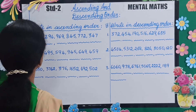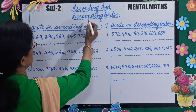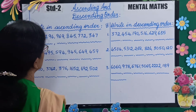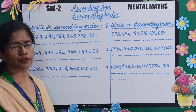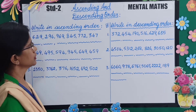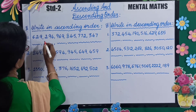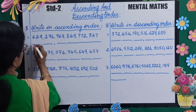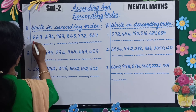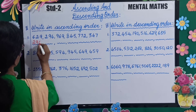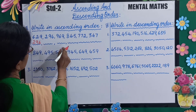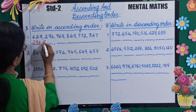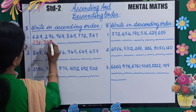Our next topic is ascending and descending order. Write in ascending order. Ascending order means from small to big. You will see which is the smallest number. The first number is 296, next is 347.